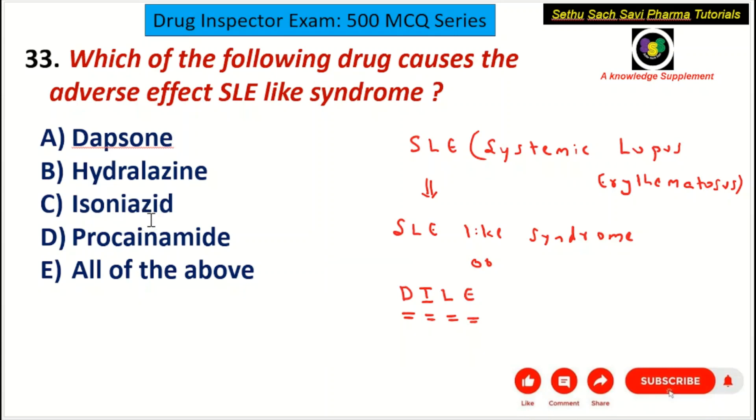Coming back to the question — dapsone causes SLE-like syndrome, hydralazine causes SLE-like syndrome, and isoniazid causes SLE-like syndrome. So the correct answer is E: all of the above.